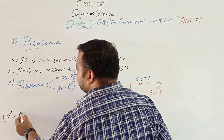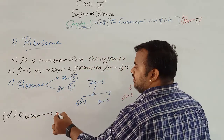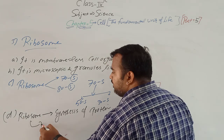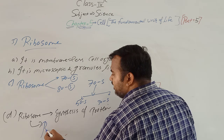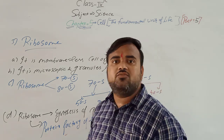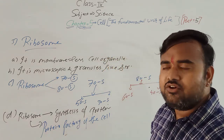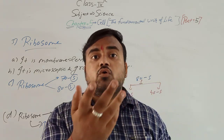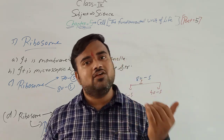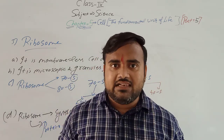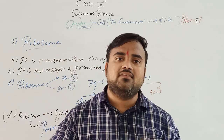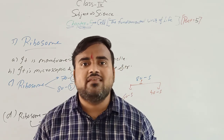The function of ribosome is the synthesis of protein — therefore ribosome is known as the protein factory of the cell. Also, the function of chloroplast is to help in photosynthesis, performed by the chlorophyll. The chloroplast cell organelle is known as the kitchen of the cell because by photosynthesis, plants prepare their food.